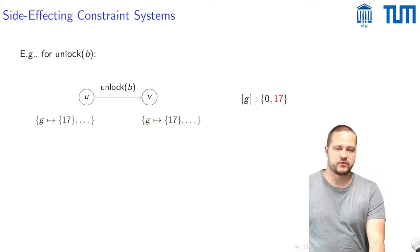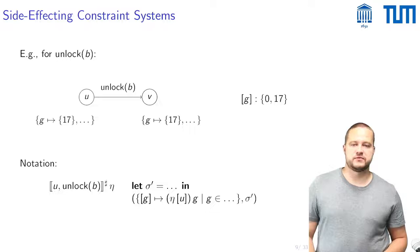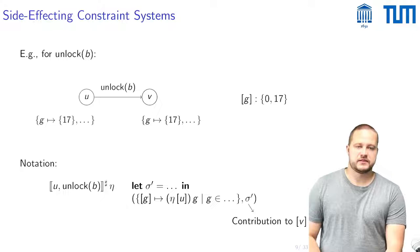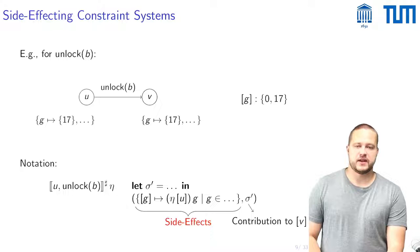And how can one write this down? A possible way to write this down is given here. So one would first of all calculate the new local state sigma prime and this would be the second component of this tuple so this is a contribution to V and then the first component of this tuple would be a set of side effects.